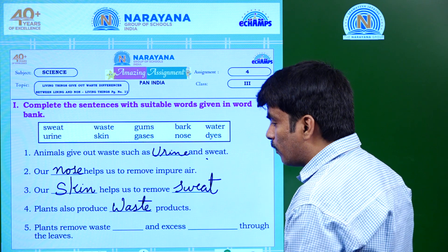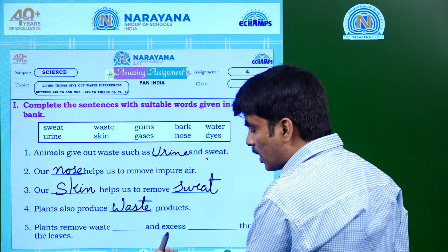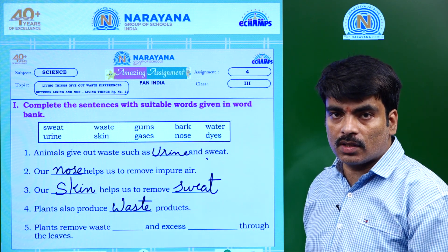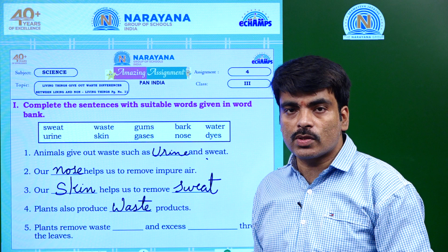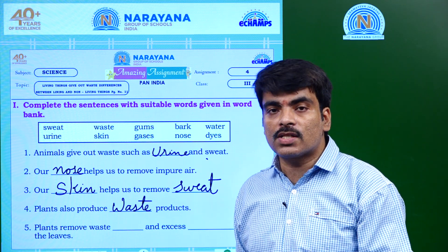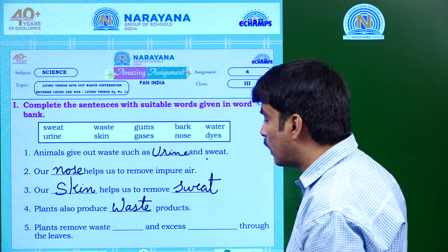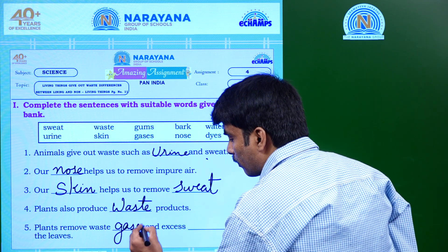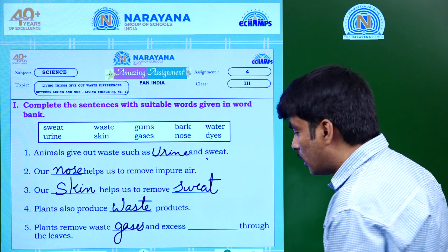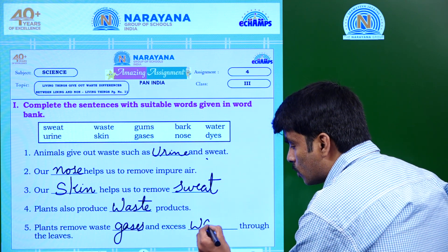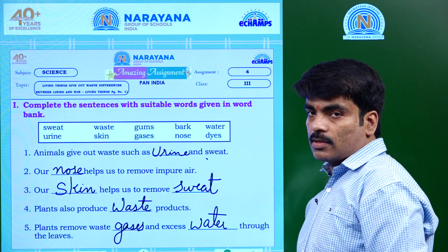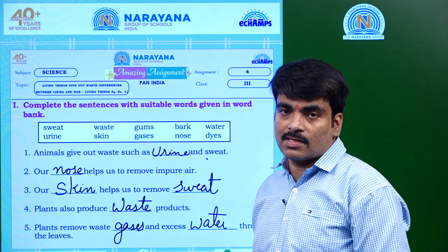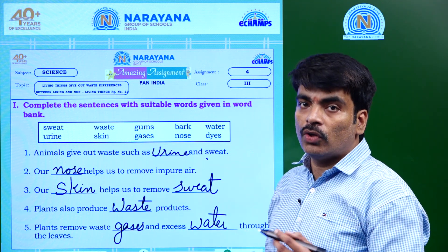Plants remove waste, dash, and excess dash through the leaves. Do you know leaves perform photosynthesis? In the process of photosynthesis, plants give out some waste products. Plants remove waste gases and excess water through the leaves during the process of photosynthesis.